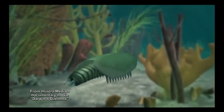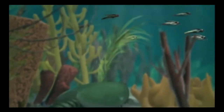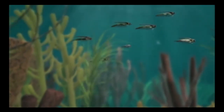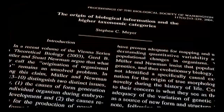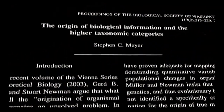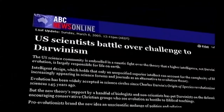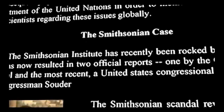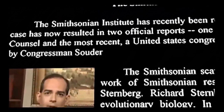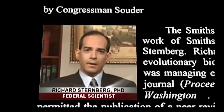If the Darwinian mechanism cannot explain the origin of the information necessary to produce the Cambrian animals, is there any other cause that can? For more than 20 years, Stephen Meyer has explored this fundamental mystery. In August 2004, Meyer published several of his conclusions in a peer-reviewed journal affiliated with the Smithsonian Institution. His essay triggered a firestorm of controversy that jeopardized the career of the journal's editor, evolutionary biologist Richard Sternberg.